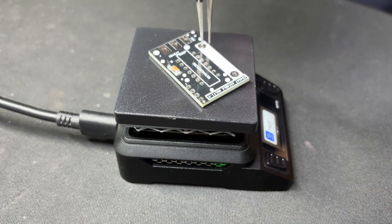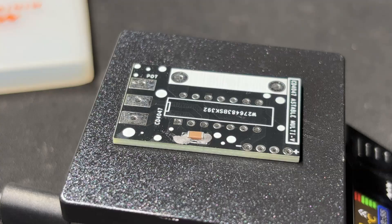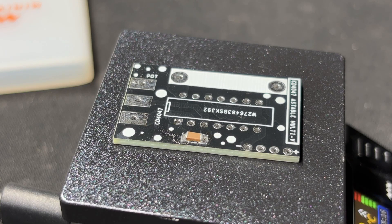Next, we use our tiny reflow hotplate, which we got from PCBWay gift shop, to solder the capacitor on the PCB by heating the solder paste up to its melting temperature.